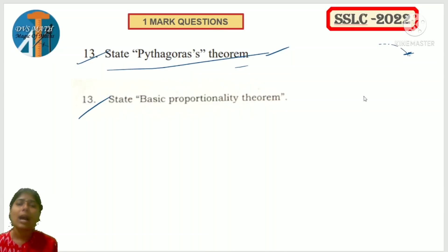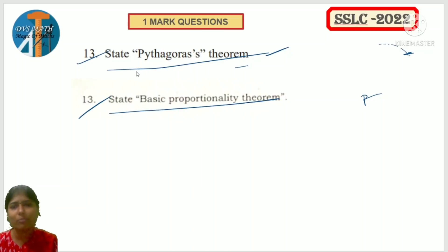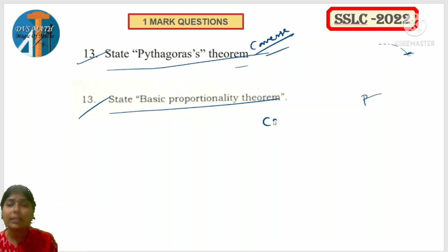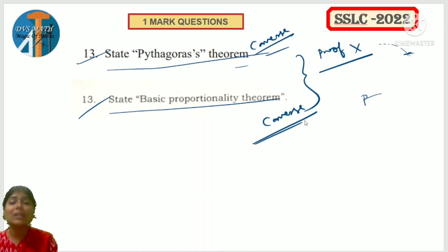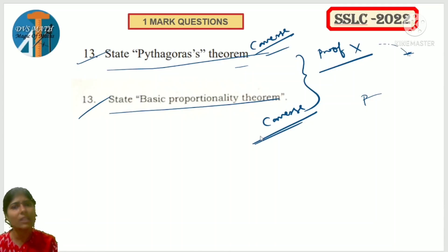Also, Pythagoras theorem and BPT. If you practice Pythagoras and BPT converse statement, proof is better. Converse is better because if you don't have a direct problem, converse helps. Statement is better to know. Converse of Pythagoras, Converse of BPT is better - chances are 1 mark. Clear? Yes.